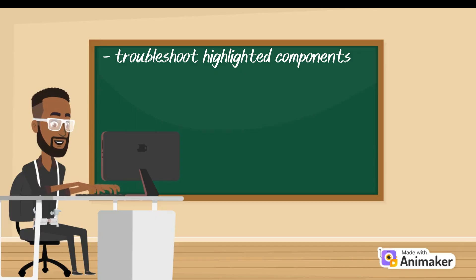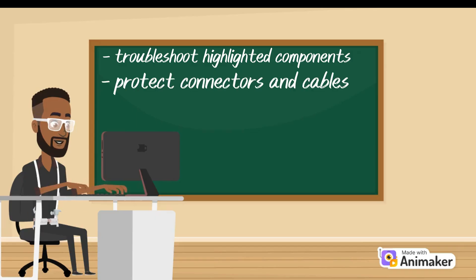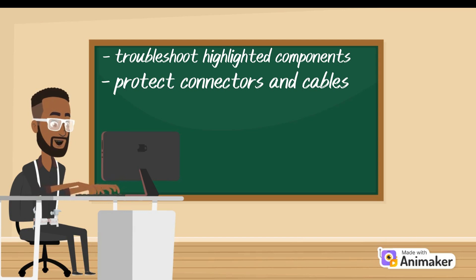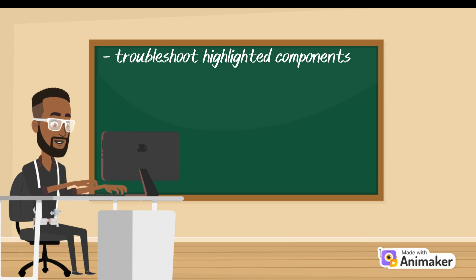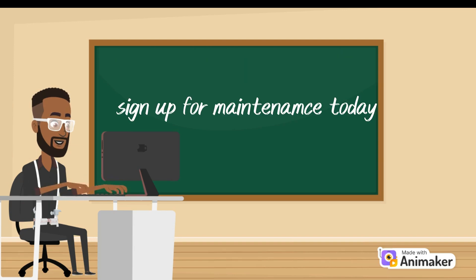In summary, you need to troubleshoot the highlighted components when your IP CCTV system is faulty. In order to avoid most of these problems, ensure your camera cables and connectors are properly covered and insulated. Also, ensure you have a backup power source with automatic voltage regulation to avoid failure due to power fluctuations. And lastly, contact a professional and sign up for maintenance today.